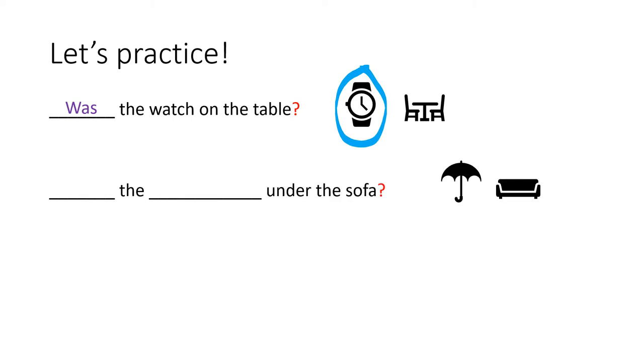The next one, this one is missing two words. So let's see. The under the sofa. Well, we have the sofa and then we have this object. What is this? It's an umbrella. Good. And it's singular, right? There's only one. So are we going to use was or were? Was the umbrella under the sofa. Good.